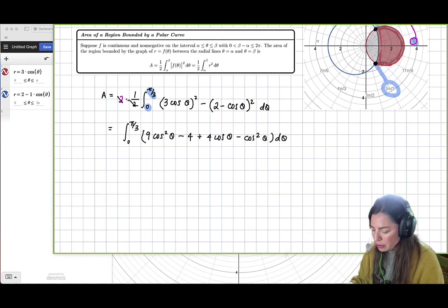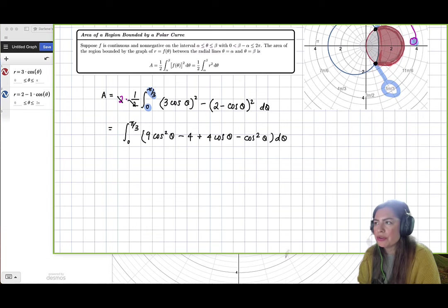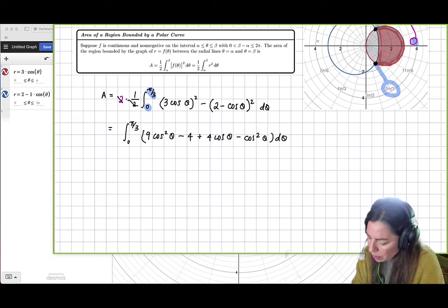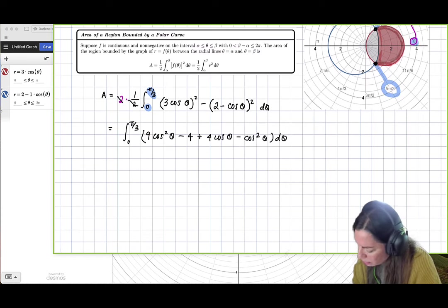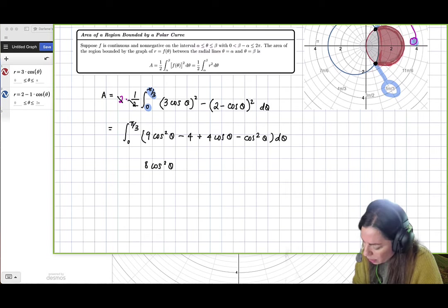So now it just becomes a very, just kind of a simple trigonometric integral. So now at this point we can go ahead and combine like terms and see what we can do. So right away I see 9 cosine squared minus the cosine squared gives us that 8 cosine squared plus the 4 cosine, and then the minus 4 in the back, d theta, and then the definite integral from 0 to pi over 3.